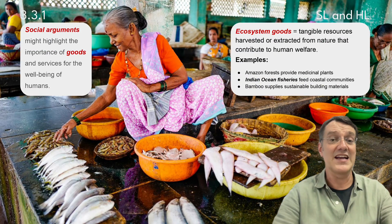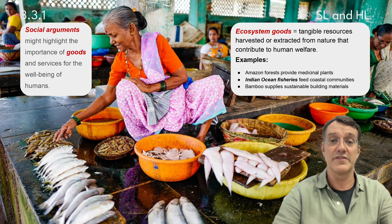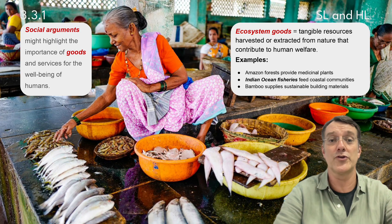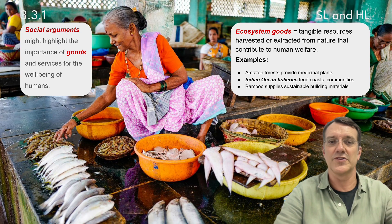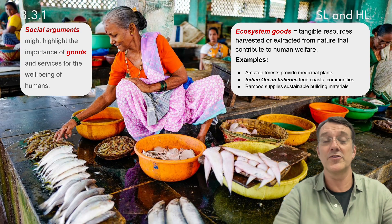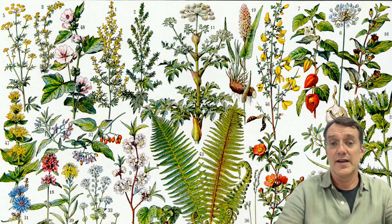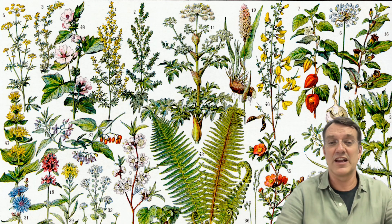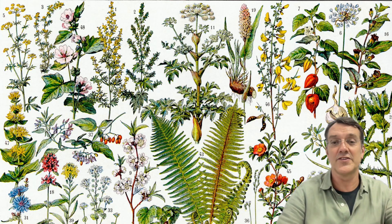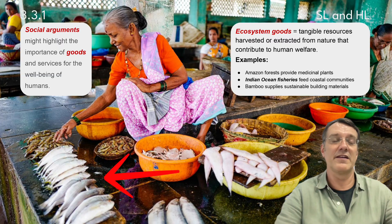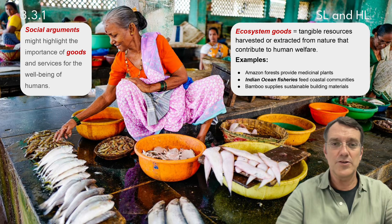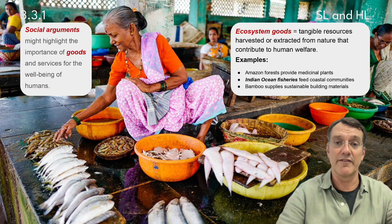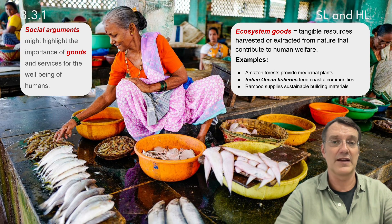Social arguments highlight the importance of ecosystem goods and services for human well-being. Ecosystem goods are tangible resources harvested from nature that contribute to human welfare. Examples include Amazon forests providing medicinal plants, the Indian Ocean fisheries feeding coastal communities, and bamboo supplying sustainable building materials. These goods directly support human livelihoods and cultural practices.